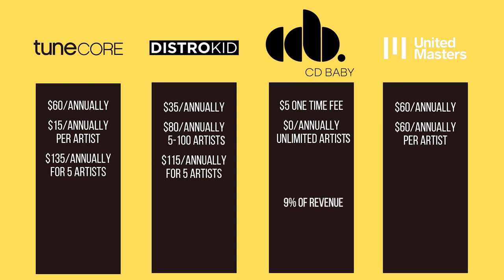With CD Baby, they charge a percentage of revenue, so you can't look at it as an annual cost per artist the same way. You have to look at it as a percentage of revenue. If you made $1,000, you'd end up paying CD Baby $90 for digital distribution. If you made $10,000, you'd pay CD Baby $900. With United Masters, if you had five artists on your roster, you'd end up paying $300 a year.